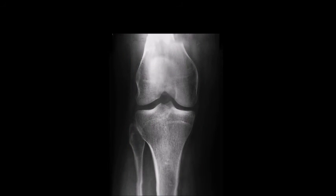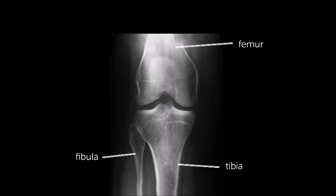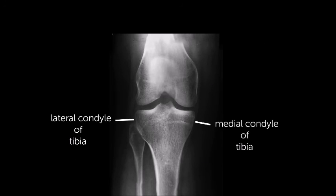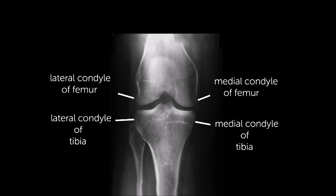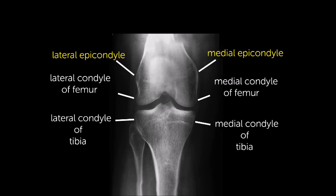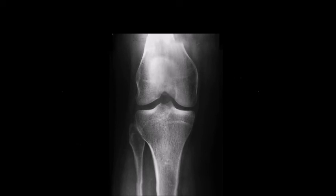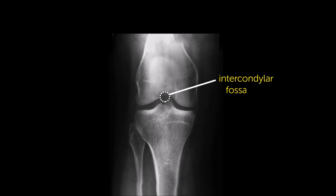The general anatomy visible on an AP knee x-ray includes the tibia, fibula, femur, and patella. As our tibia has condyles, so too does our femur, these being pillars for the articulating surfaces of the knee. We use the readily palpable epicondyles as positioning landmarks. Other pertinent anatomy includes the intercondyloid eminence and the intercondylar fossa.